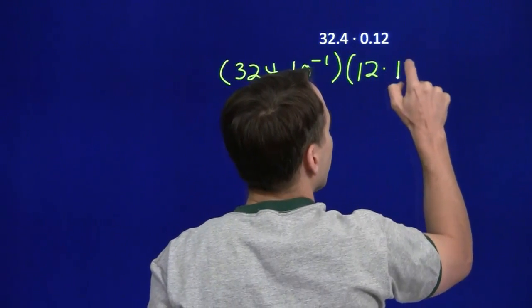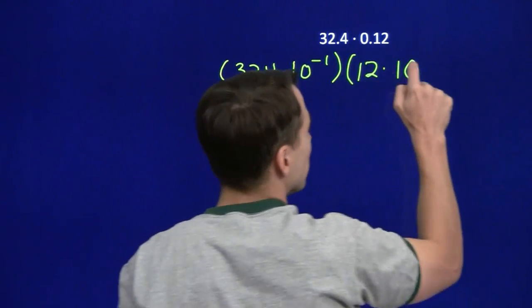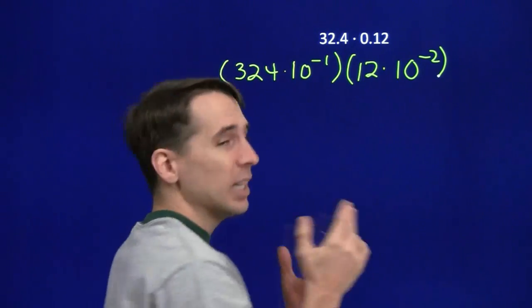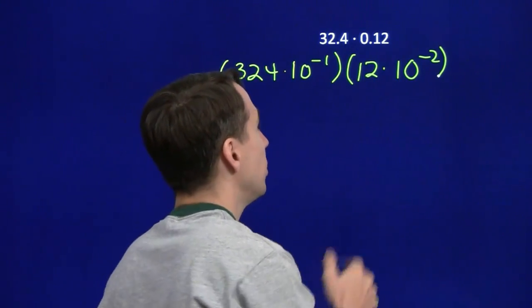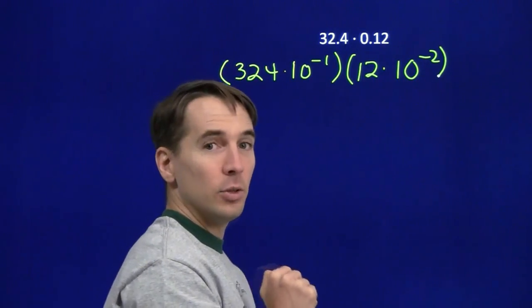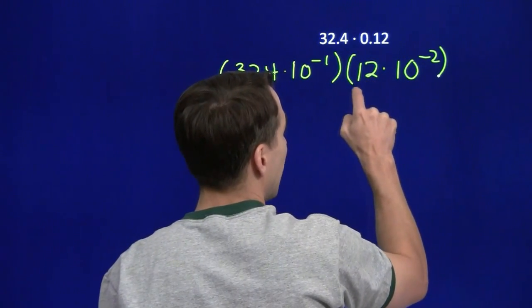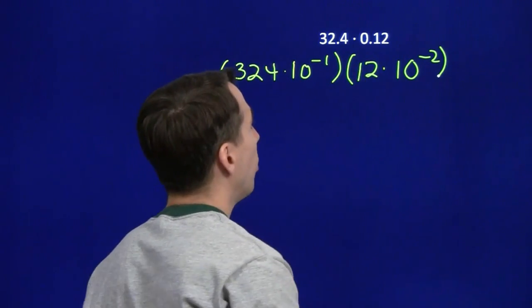0.12, well here we have to divide by 10 twice, so we have 12 times 10 to the negative 2. And again, we check it. 12 times 10 to the negative 2, multiplying by 10 to the negative 2, it's the same as dividing by 10 squared, it's the same thing as dividing by two tens, and we get 0.12.